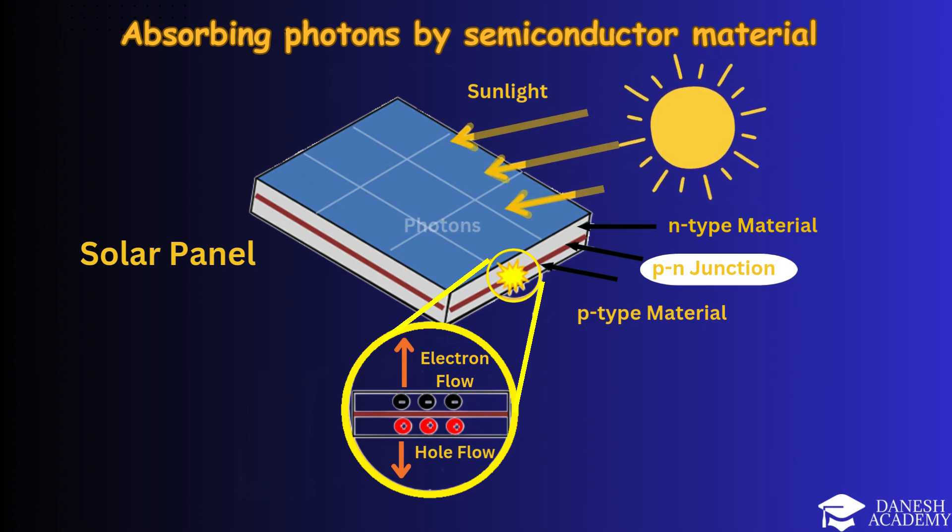Photon energy transfer: Photons excite electrons, freeing them from the silicon atoms. This process creates free electrons and holes, which are separated by the electric field at the P-N junction.